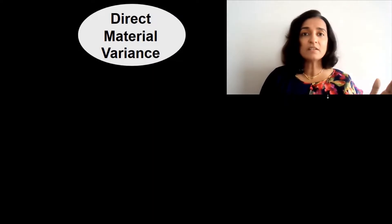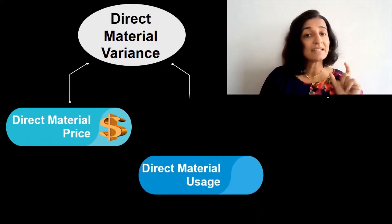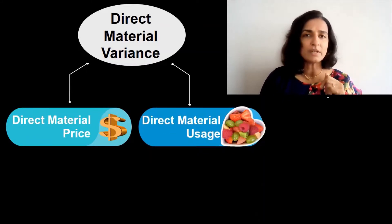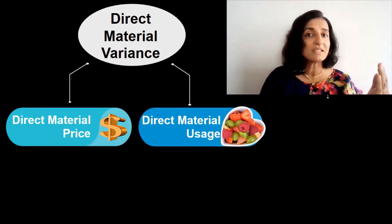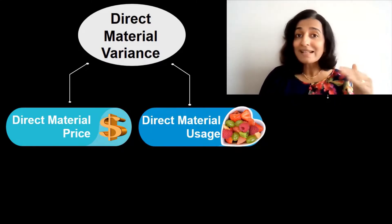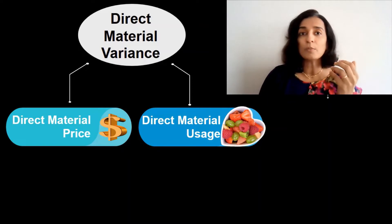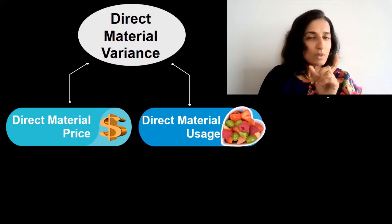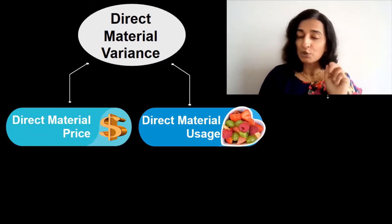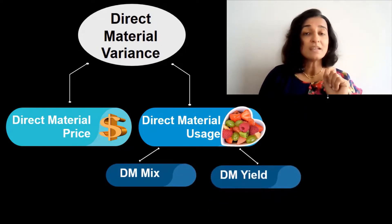We know that the direct material variance is divided into the direct material price variance and the direct material usage variance. The price variance measures whether the price paid for raw materials is more or less than the standard. The usage variance measures whether the quantity of raw materials used is more or less than the standard. The usage variance is further divided into two: the direct material mix variance and the direct material yield variance.